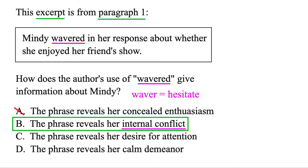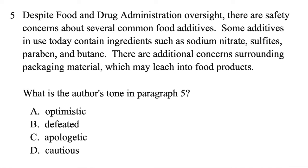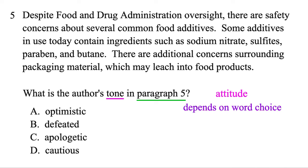Let's check out another one. For this one we're just going to focus on paragraph 5. What is the author's tone in paragraph 5? Now tone — that's the same thing as the author's attitude, and you can find it based on the words they use to describe the subject.